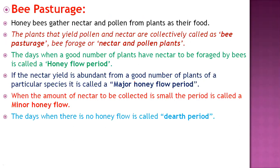A very important term likely to appear in a final exam is bee pasturage. Honeybees gather nectar and pollen from plants for food. All the plants that yield pollen and nectar are collectively called bee pasturage. These plants are responsible for providing yield — pollen and nectar — and are also known as bee forage or nectar and pollen plants.